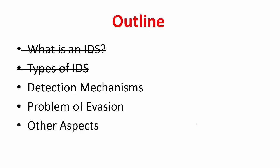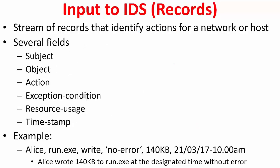How does an IDS actually detect an attack? So let's get into that. The input to an IDS system is in the form of records. Don't confuse them with TLS and SSL records. Records are nothing but a bunch of fields, and they identify actions for a network or a host. So for example,